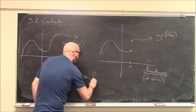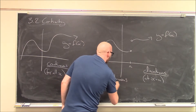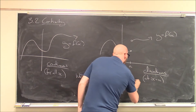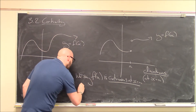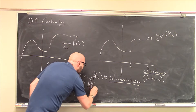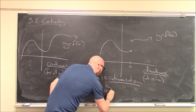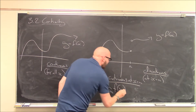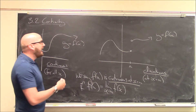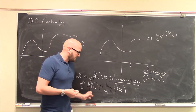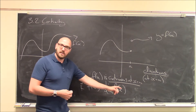We say f of x is continuous at x equals a — so we'll define continuity at just a single point — if the value of the function, f of a, is equal to the limit as x approaches a of f of x. So there's the definition of a function being continuous at the point x equals a. It's just this equality: the function value f of a is equal to the limit of the function as x approaches a.